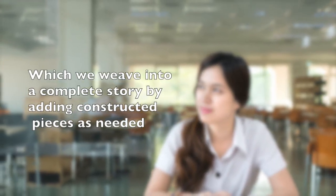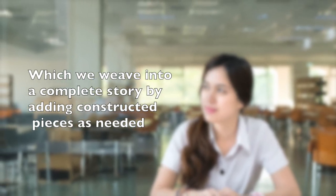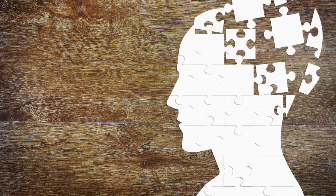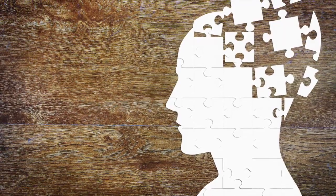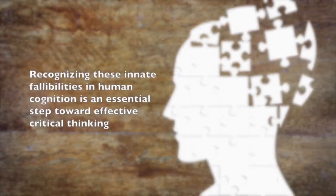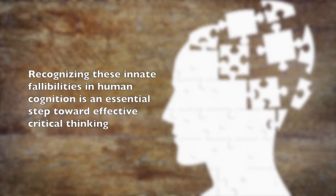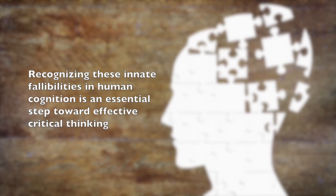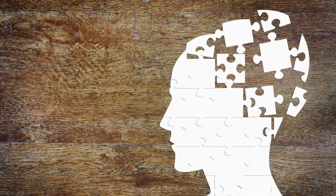We attend to a very small subset of information, which we weave into a complete story by adding constructed pieces as needed. The end result is a story that is largely a product of our cognitive workings, where sensory input is constructed into meaningful patterns. Not only are the components of what we perceive constructed, but also how we put our perceptions together into a meaningful way is also constructed. Recognizing these innate fallibilities in human cognition is an essential step towards effective critical thinking.